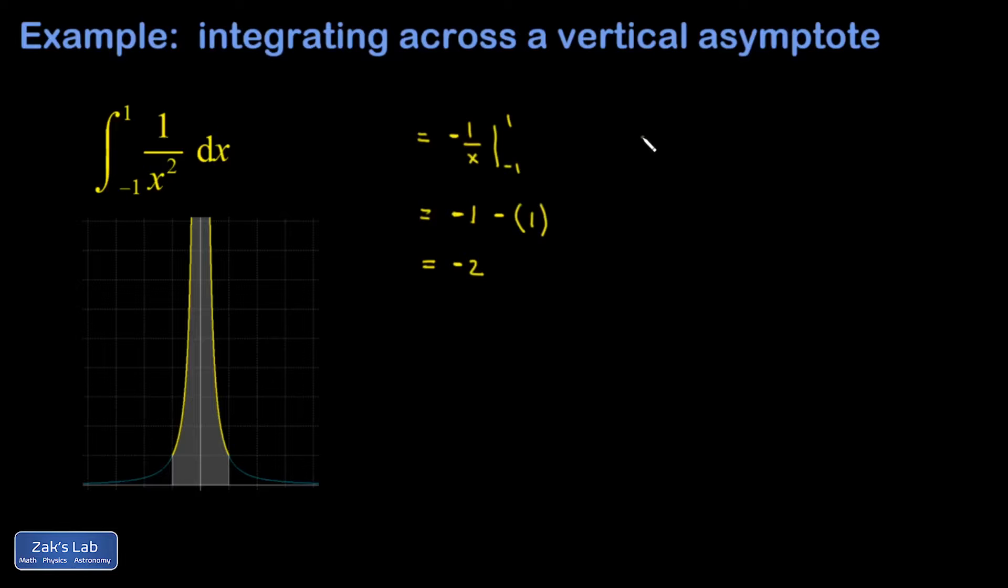When I do that, my original integral breaks into the integral from negative 1 to 0 of 1 over x squared dx, plus the integral from 0 to 1 of 1 over x squared dx. Even writing it this way is a bit dangerous, because that 0, when I plug it in for x, gives me an infinity.